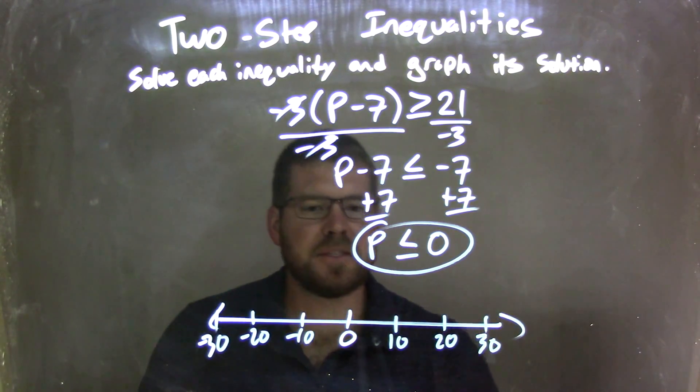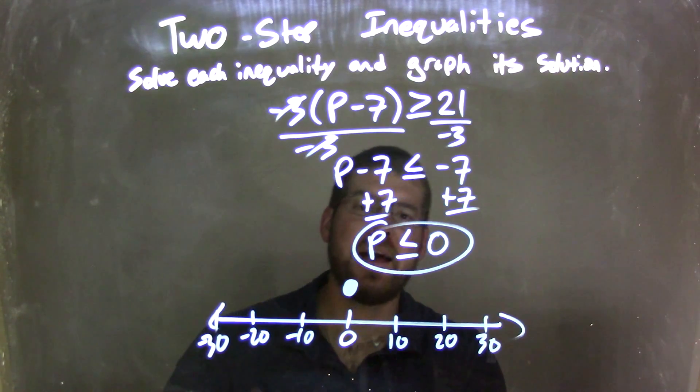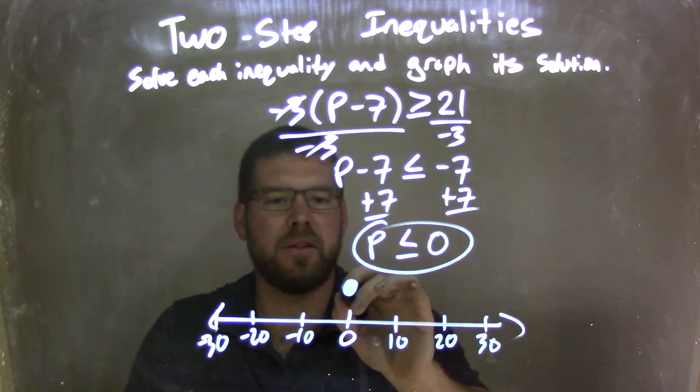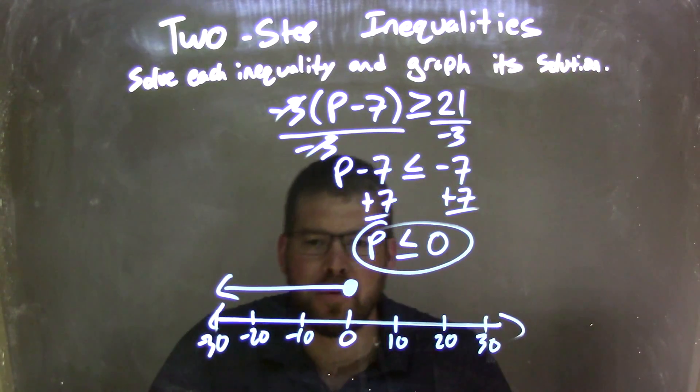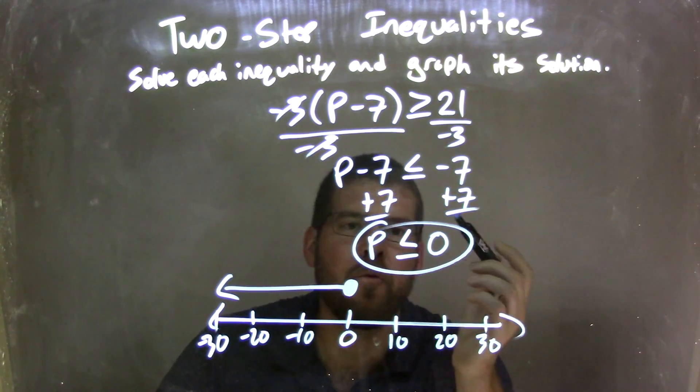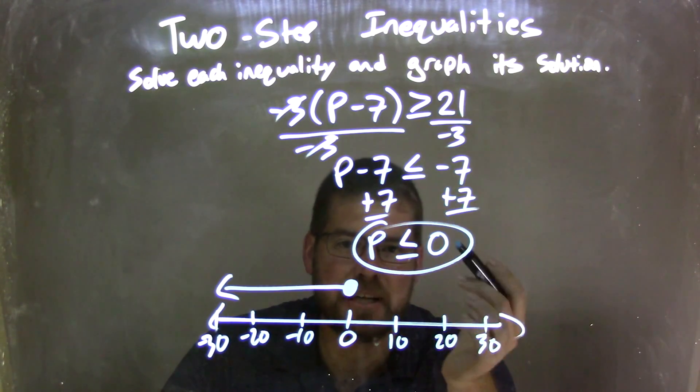So if P is less than or equal to 0, at 0 I have a closed circle right there. And since it's less than, my arrow goes to the left. And there we have it. We have a graph that represents all of the values of what P can be, which are P is less than or equal to 0.